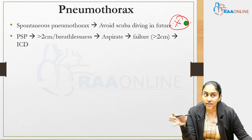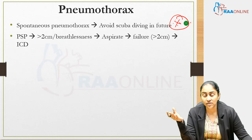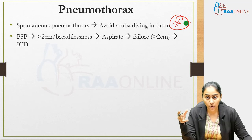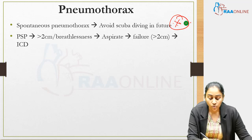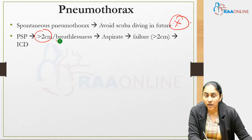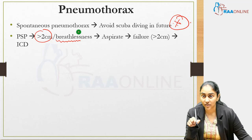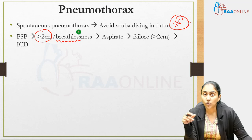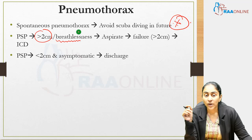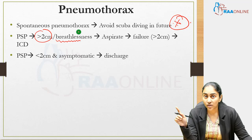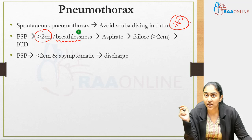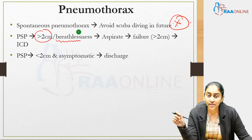For primary spontaneous pneumothorax, the cutoff is two centimetres. If size is more than two centimetres or the patient is symptomatic, aspirate. If after aspiration there is still more than two centimetres of pneumothorax, insert an ICD (intercostal drain). If size is less than two centimetres and the patient is asymptomatic, discharge the patient.